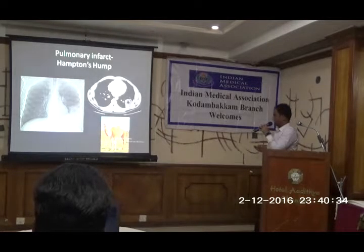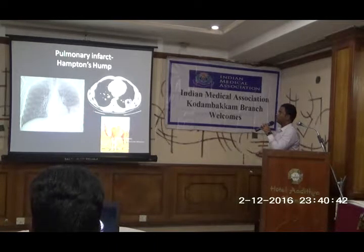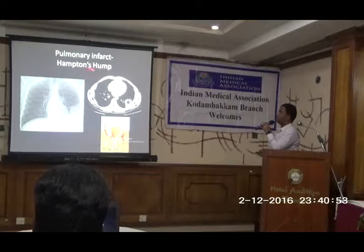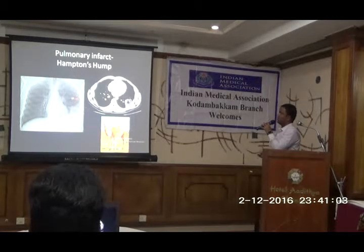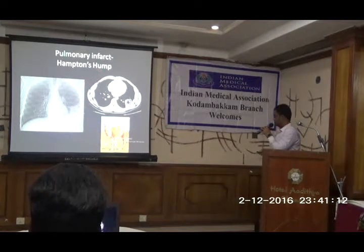Another finding described in pulmonary infarct associated with extensive pulmonary thromboembolism: if there is a pulmonary infarct, we have a sign called Hampton's hump. Hampton's hump is seen in pulmonary infarct — it is less common, because to have a pulmonary infarct both the pulmonary artery and the bronchial artery should be affected, which is quite rare. But Hampton's hump sign is described in pulmonary thromboembolism.